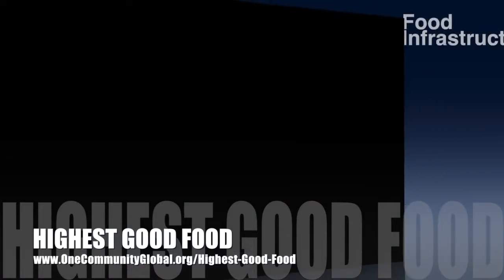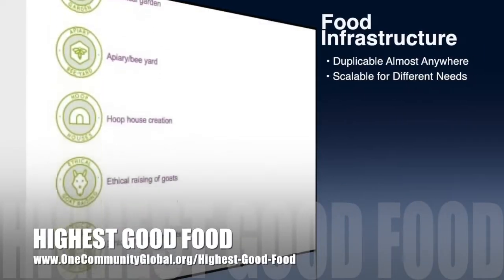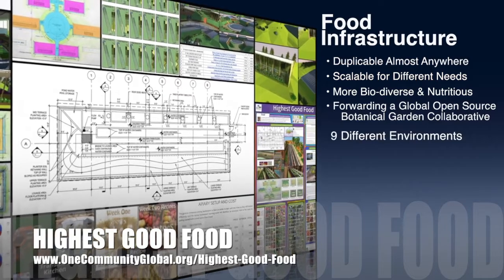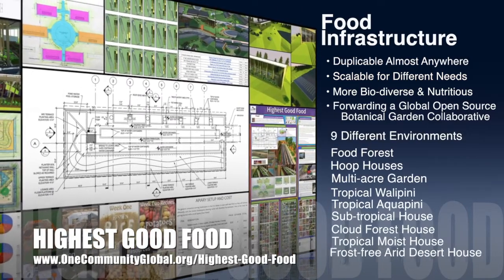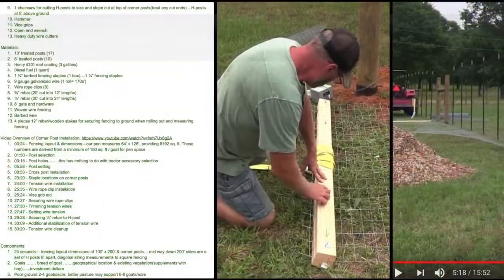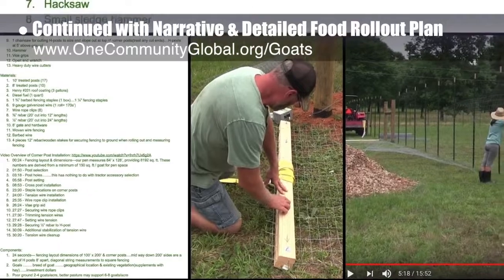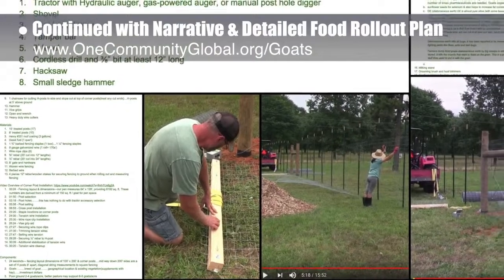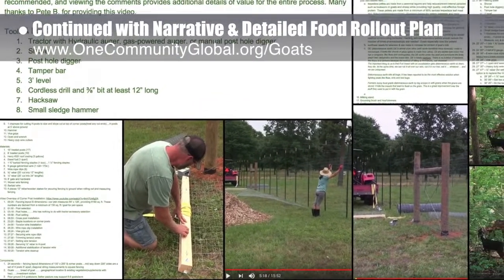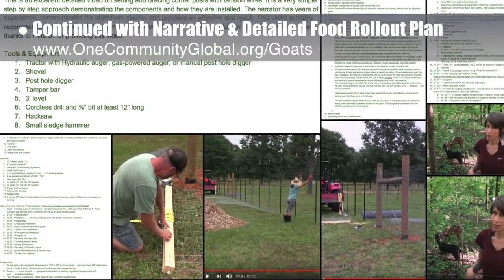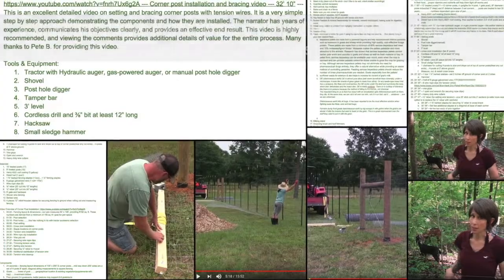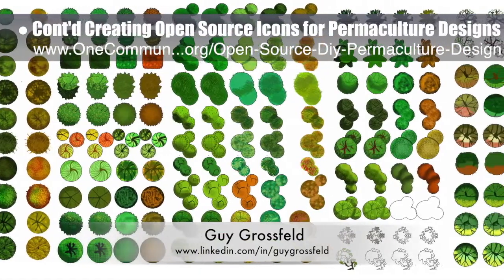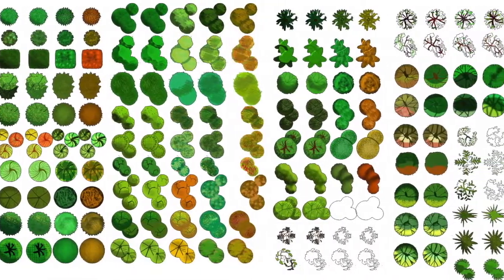One Community's approach to highest good food is duplicable almost anywhere, scalable for different needs, more biodiverse and nutritious, part of forwarding a global open-source botanical garden collaborative, and includes nine different free-shared and duplicable growing environments. This week the core team continued writing the behind-the-scenes narrative in the detailed food rollout plan, watched videos on goat care and fencing, created an initial drawing for the goat pen size, and organized related equipment, materials, and information into a timeline for implementation. Guy Grossfeld, graphic designer, completed his eighth week creating an open-source icon and symbol set for permaculture designs.